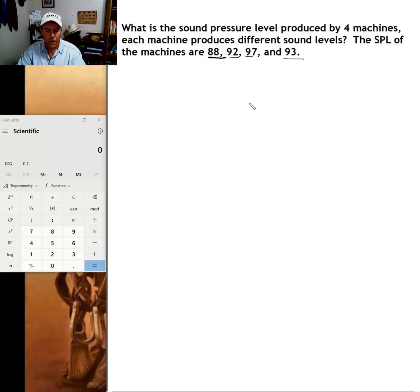The SPL of the individual machines are 88, 92, 97, and 93. Now we had another video tutorial where we looked at how we calculate sound in the workplace when there are multiple machines and all machines produce the same individual sound levels. That's a different formula for that situation versus this situation. And this formula, I'll tell you right out of the gate, it's going to be a little intimidating to you.